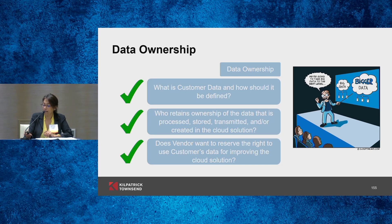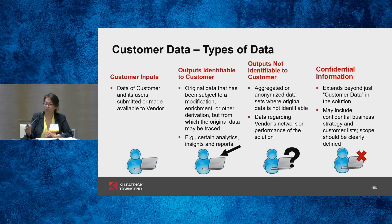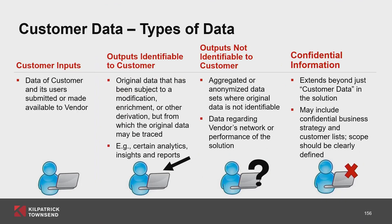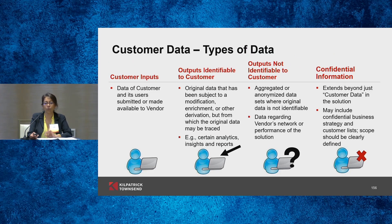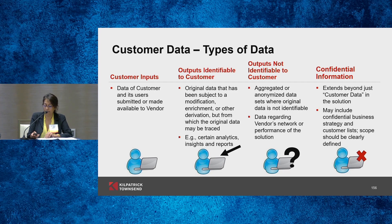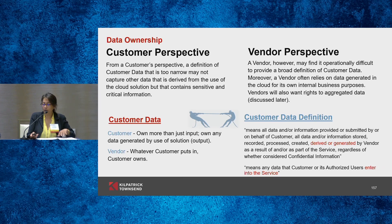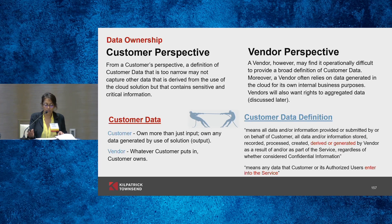It's really important to address the outputs as well. Typically, the customer data definition touches on these types of data buckets. The first is inputs — there's no controversy about who owns inputs; everybody agrees the customer owns them. But the gaps arise with respect to outputs — who owns those? If it's the vendor who owns the outputs, they have the right to use them however they want during the contract and post-termination without any restrictions. The customer is obviously interested in a broader definition while the vendor prefers a narrower one. We've included sample customer data definitions in the slides for reference.